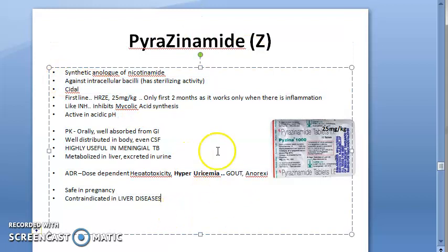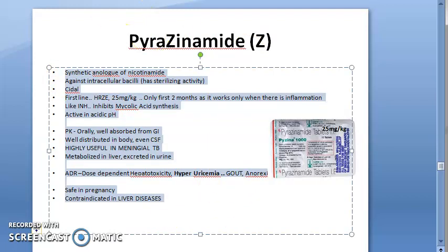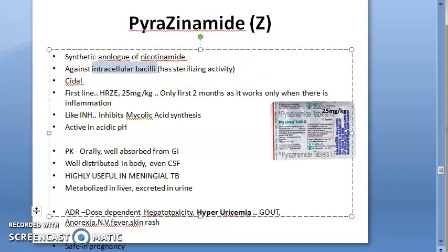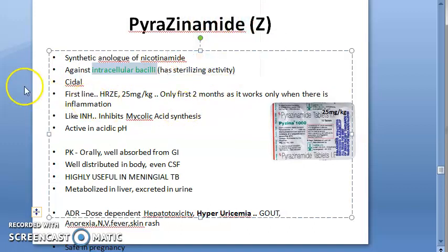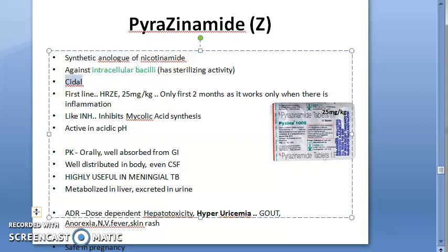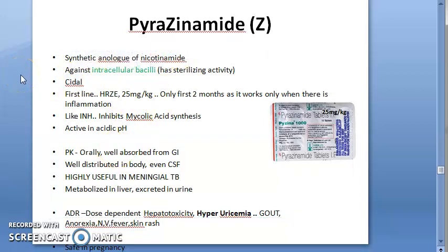Pyrazinamide is a synthetic analog of nicotinamide, so it has something to do with nicotine — just like INH, which was a nicotinic acid derivative. It is effective against intracellular bacilli. Streptomycin, by contrast, is effective against extracellular bacilli. Pyrazinamide goes inside and kills — it is bactericidal.